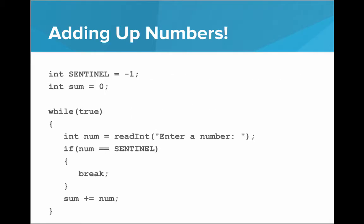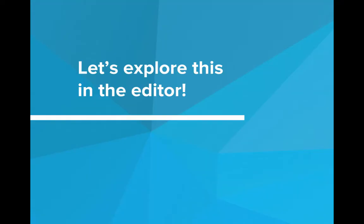So let's put that all together. Here is a program using the loop-and-a-half structure that adds up numbers. We define the sentinel value to be negative one — that is the value the user can input to indicate that the loop should stop. Then we keep a running sum of every number the user inputs. We have while true to keep executing the following code: read a number from the user, and if that number equals the sentinel value, break out. Otherwise, add the number to the running sum and keep going. This is the loop-and-a-half structure — it's a very common programming technique. Let's explore this in the editor.